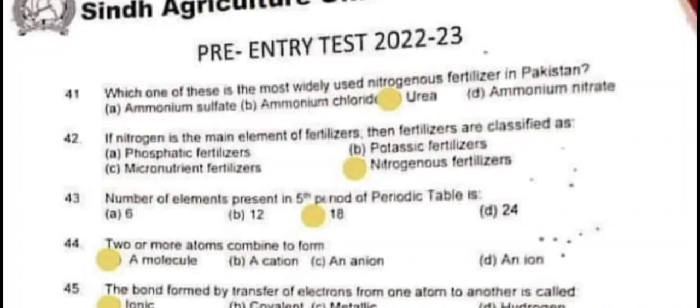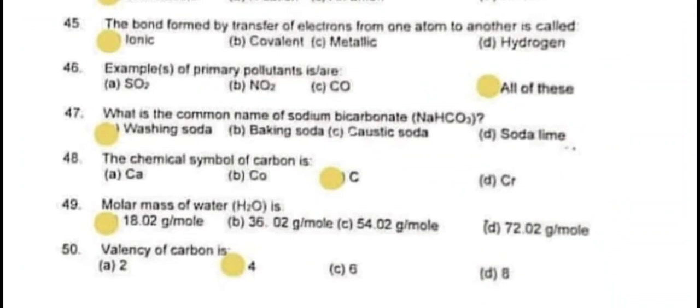Question number 44: Two or more atoms combine to form a molecule. Question number 45: The bond formed by transfer of electrons from one atom to another is called an ionic bond. Question number 46: Examples of primary pollutants are all of these.